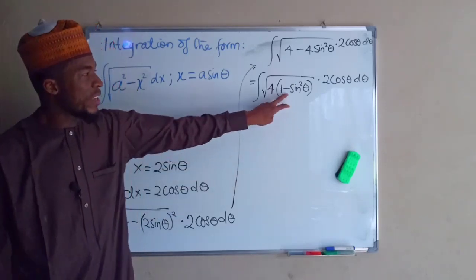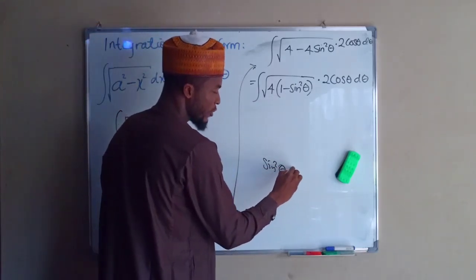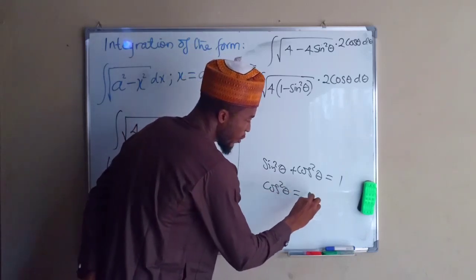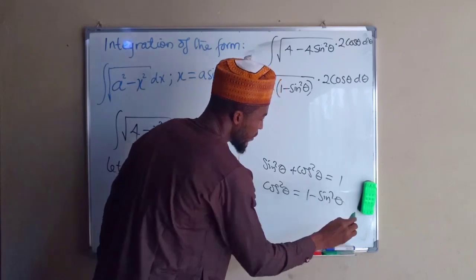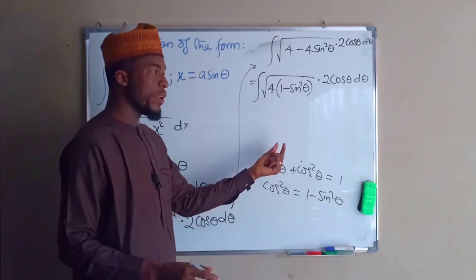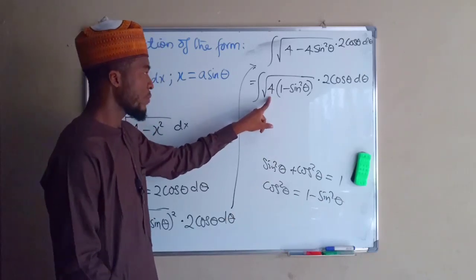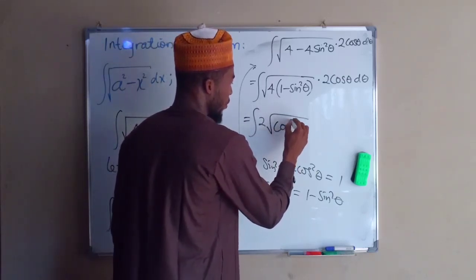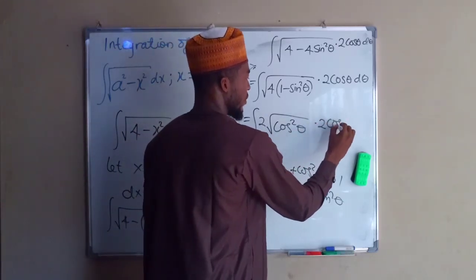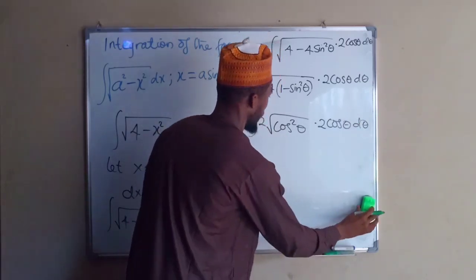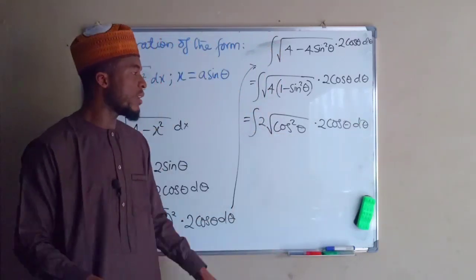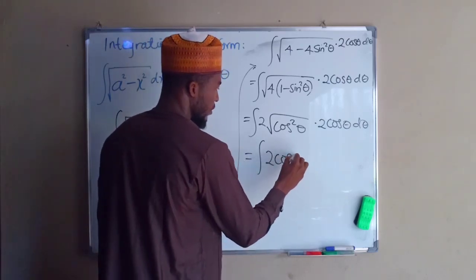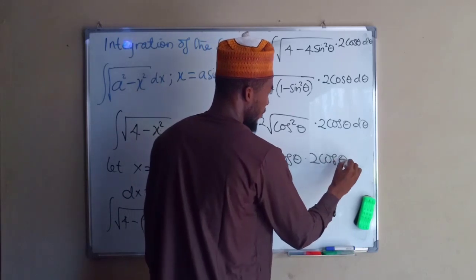From the trigonometric identity, sine squared theta plus cos squared theta equals 1, therefore cos squared theta equals 1 minus sine squared theta. We have 1 minus sine squared theta here, which we can replace with cos squared theta. The square root of 4 is 2, so we have the integral of 2 times the square root of cos squared theta times 2 cos theta d theta.